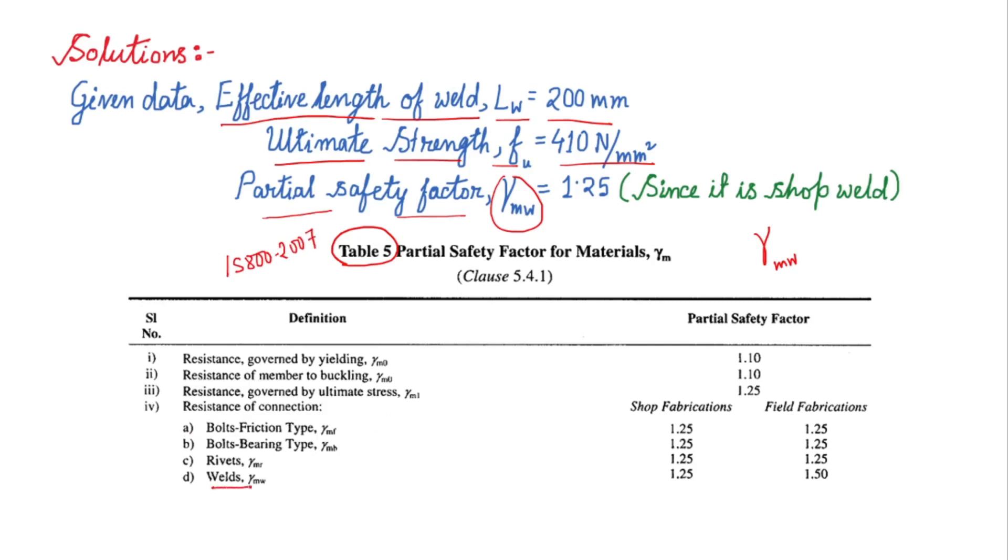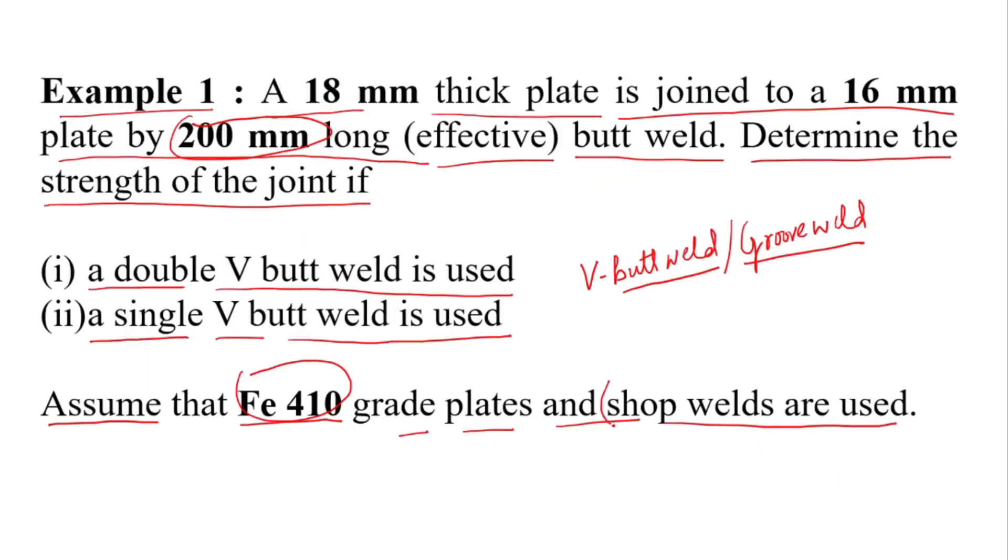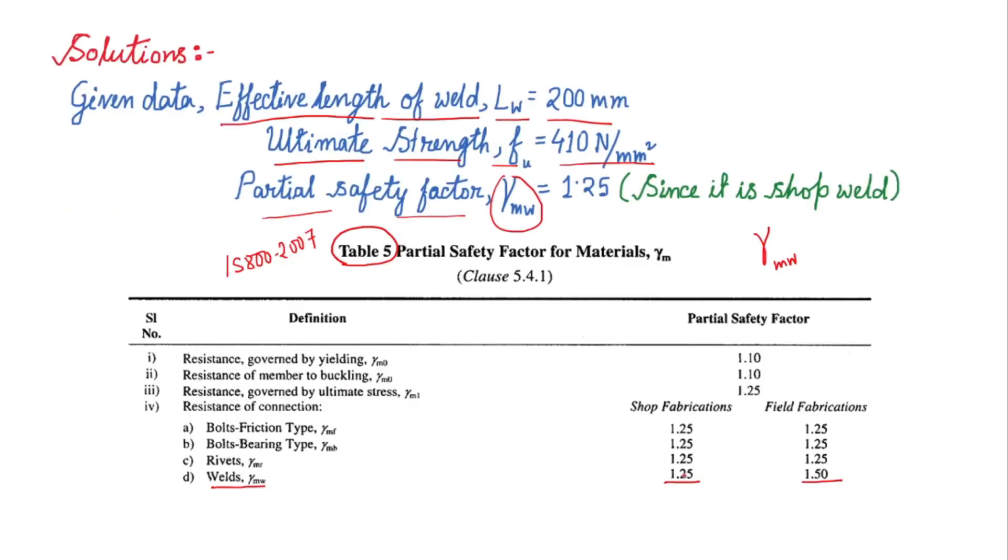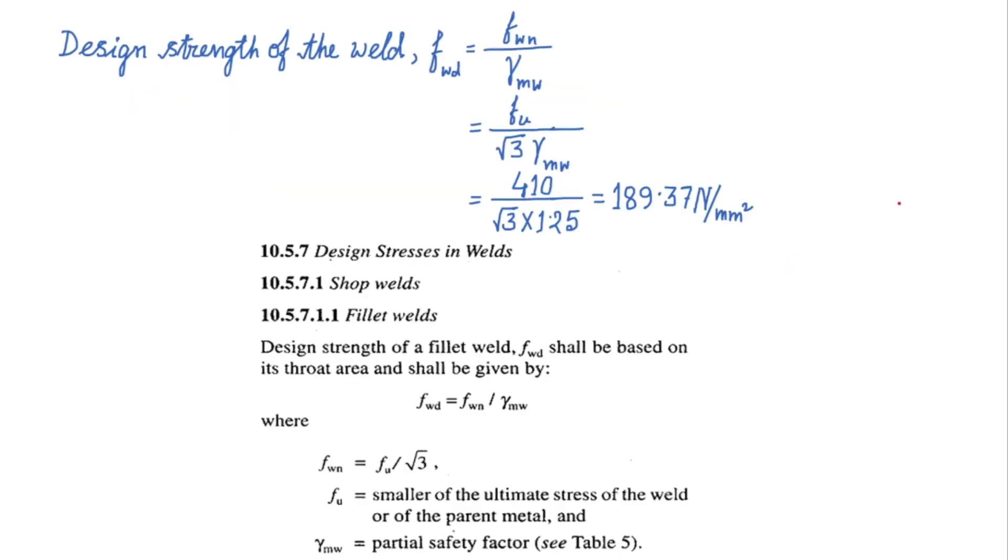For welding, for shop fabrication it is 1.25 and for field fabrication it is 1.5. As in the question it is mentioned that shop welds are used means the welding has been performed at the workshop, so we have to take gamma MW as 1.25 for this question since it is shop weld.